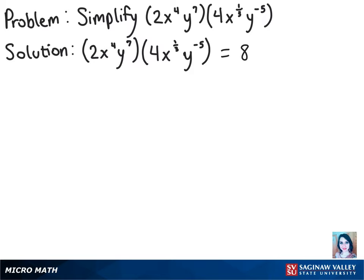And we know that when we're multiplying terms with like bases, we add their exponents. So for the x's, 4 plus 1 third is going to be 13 over 3.